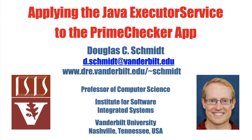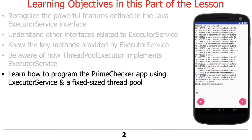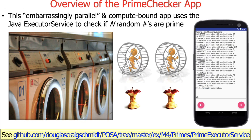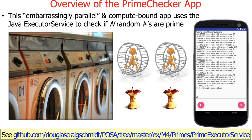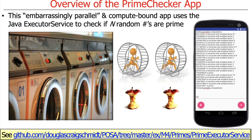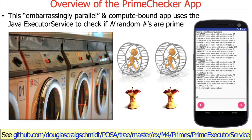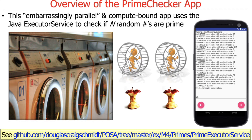Now that you've had the chance to understand the concepts behind the executor service and some of the key methods and ways you can implement the executor service interface, let's show an example of how to apply the executor service to the PrimeChecker app. This app is embarrassingly parallel and compute-bound, and this particular variant uses the executor service to check whether n random numbers are prime.